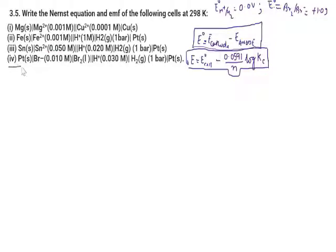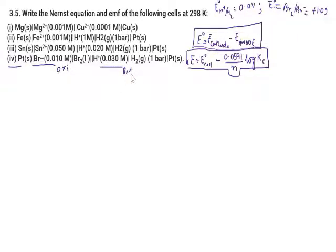Now solving part 4 of question 3.5. Platinum acts as a catalyst here, so we can ignore it. On the left (anode), bromide ions (Br⁻) are oxidized to bromine (Br₂). On the right (cathode), hydrogen ions are reduced to H₂ gas.